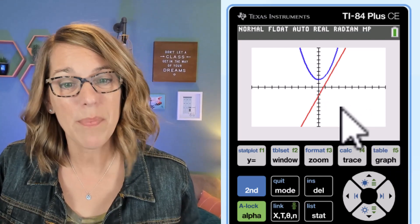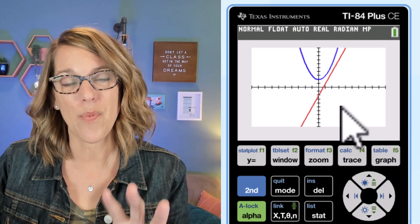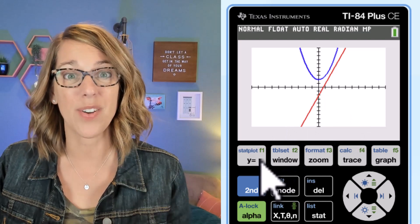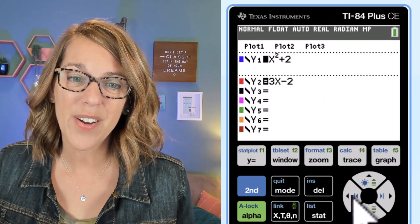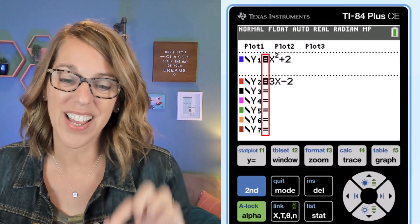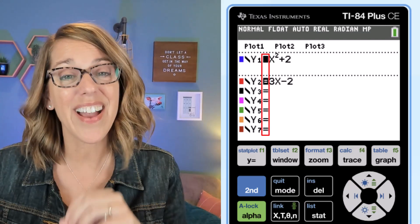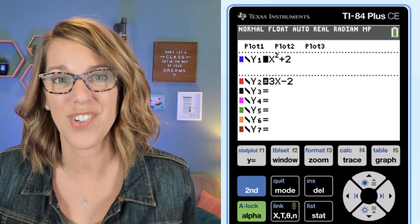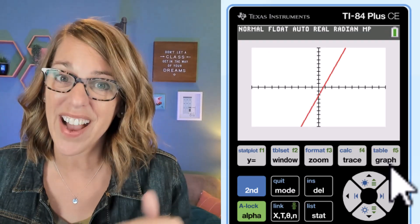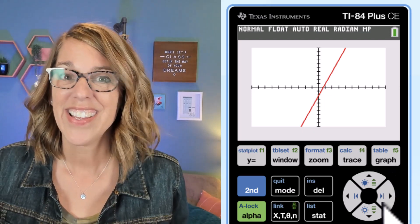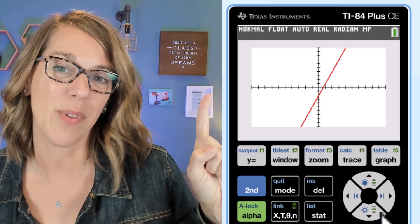Now both of these are showing up but if you just want to look at 1 go back to that equation screen your Y equal screen and if you arrow over to the equal sign you can hit enter to either highlight or un-highlight choose or un-choose those to show. If I click on that graph button I've got just the line. There is so much more check this one out.